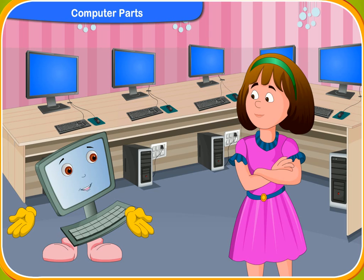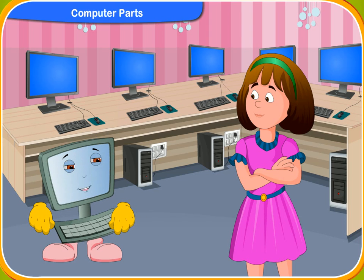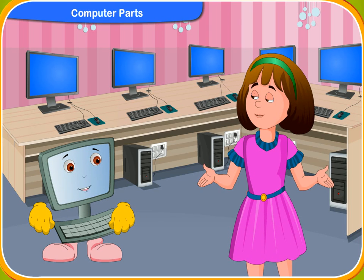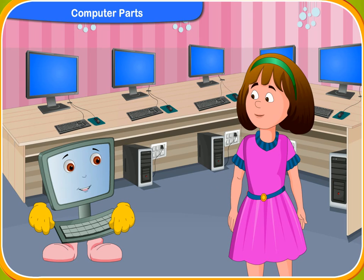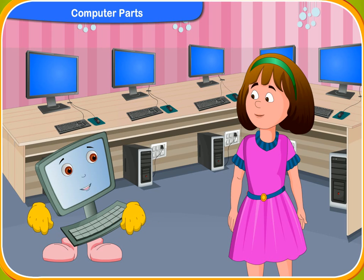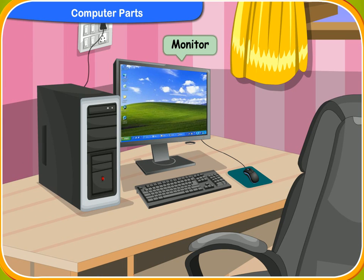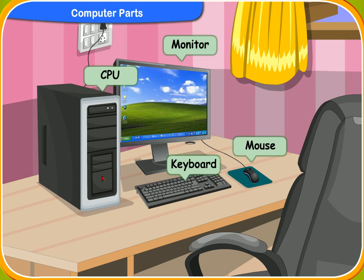Look, Rennie, this is a computer. Klico, the computer seems to have many parts in it. Yes, Rennie, a computer is made up of different parts. The monitor, the CPU, the keyboard and the mouse are four major parts of a computer. All these parts are very important.